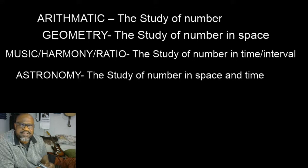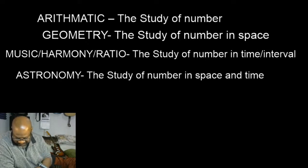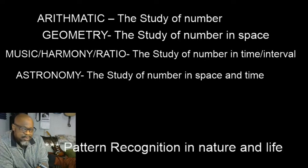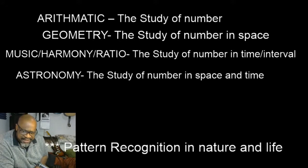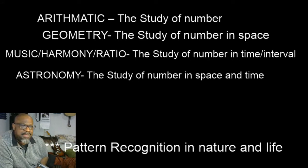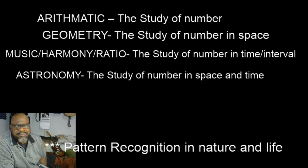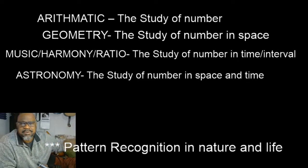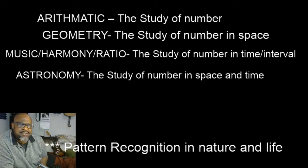So we have the study of number, the study of number in space, the study of number in time, and ultimately the study of number in space and time. What is this ultimately about? It is about pattern recognition in nature and in life. Everything is number, and most things on this planet are cyclical. Everything from the seasons to other patterns, everything from music is a cyclical pattern of notes that repeat or specific frequencies that repeat. The advantage or the reason for studying each subject within the Quadrivium has a lot to do with understanding the natural world around you and pattern recognition in nature and life.